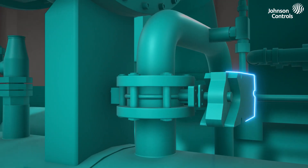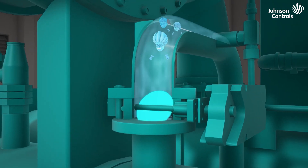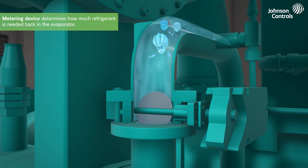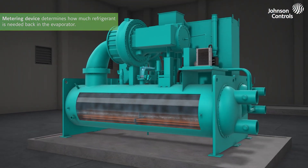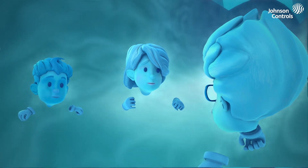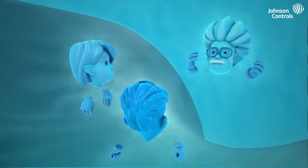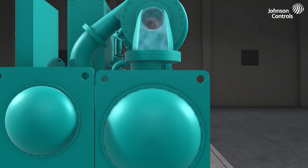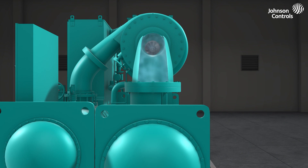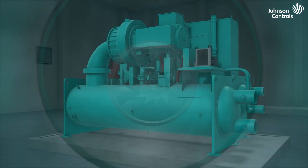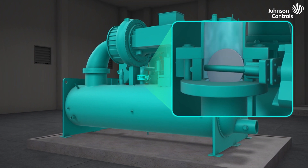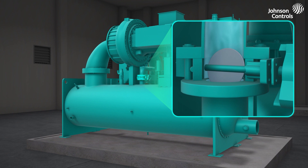This is where the metering device comes in. In addition to changing the pressure, the metering device, or expansion valve, is also responsible for determining how much refrigerant is needed back in the evaporator. Remember, we can't get any liquid in the compressor — if there's not enough heat in the evaporator to change us all to vapor again, then we'll have a problem. The metering device makes sure the right amount of refrigerant goes back into the evaporator and keeps everything running smoothly.